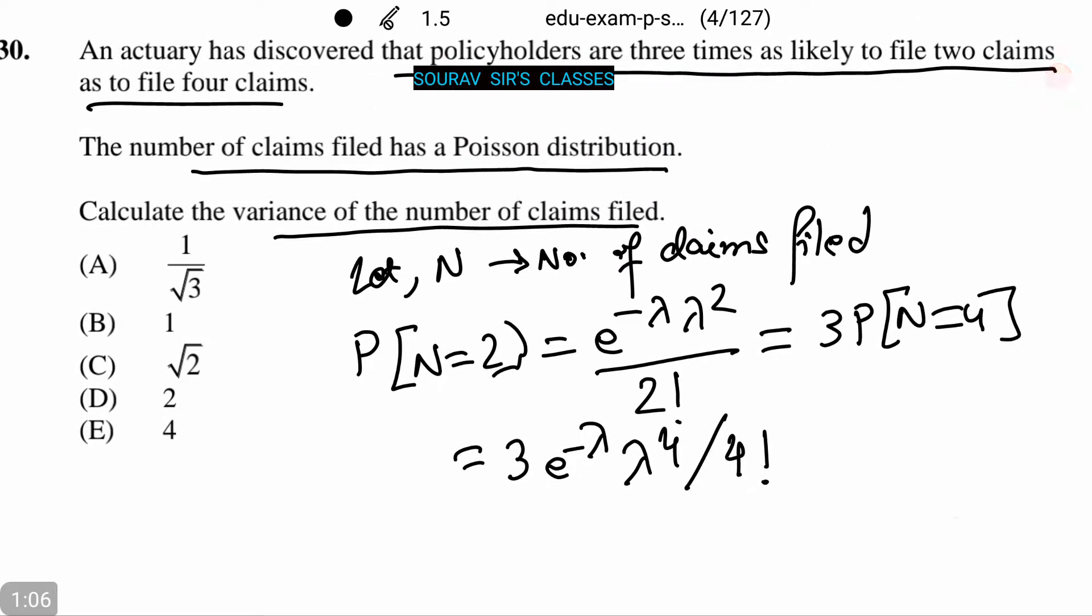Then half lambda squared equals 3 over 24 lambda to the fourth. And upon calculation, lambda squared equals 4, or lambda equals 2, which is the variance for N. And the correct option is option D.